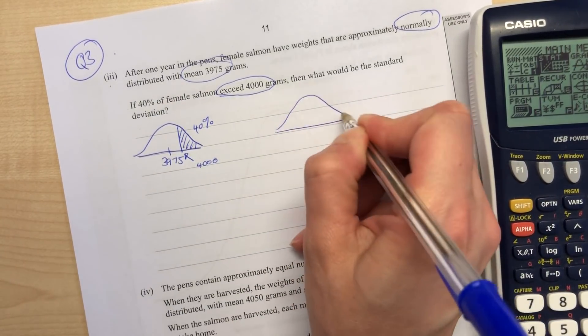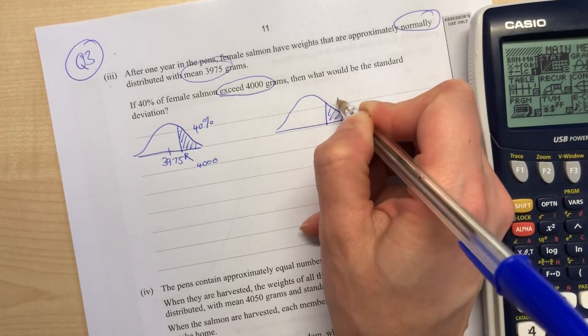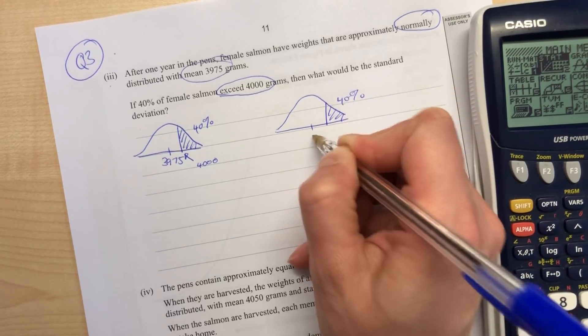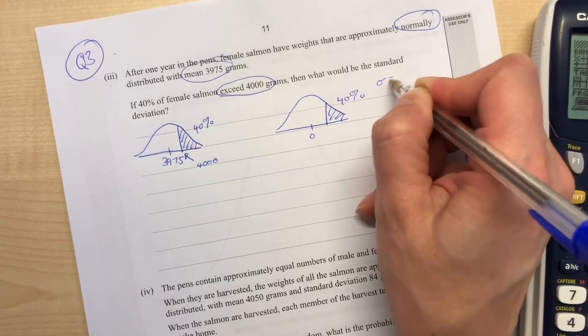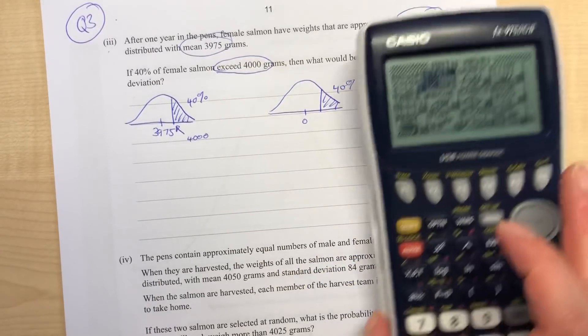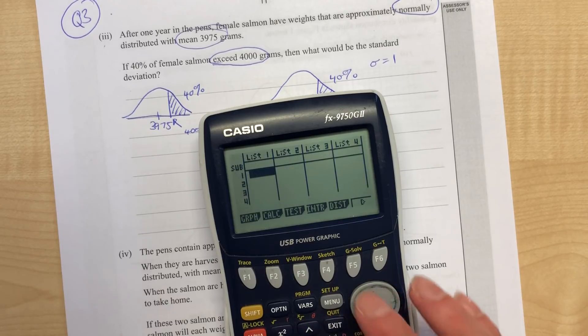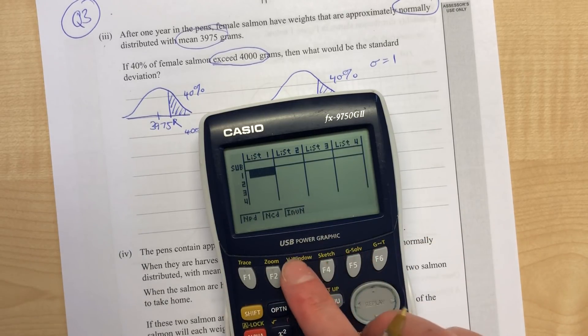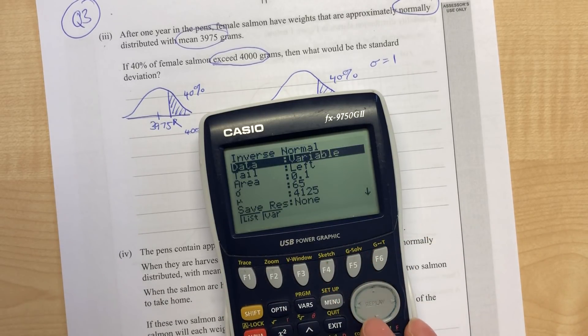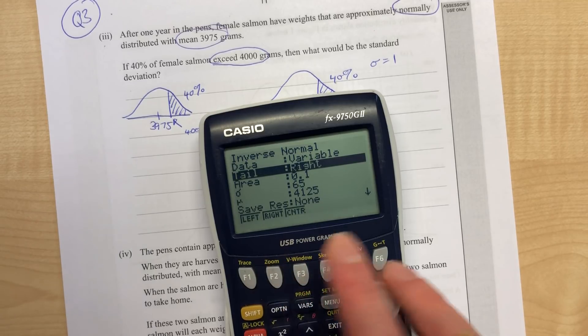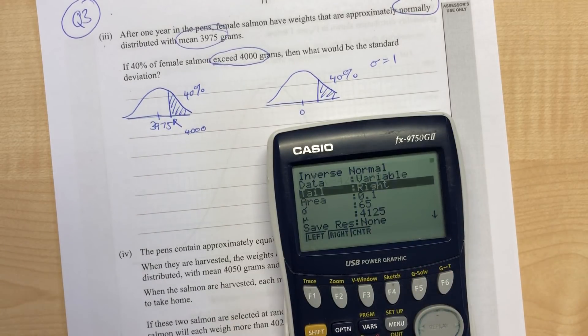If we did this on the z-curve for the top 40%, the mean would be zero, the standard deviation would be one. So we go to our stats menu, distributions, normal, inverse because we're working backwards from our probability.